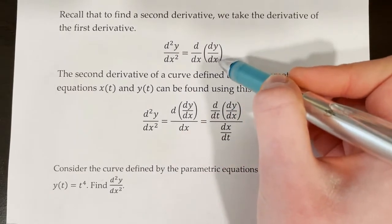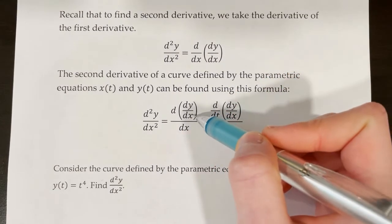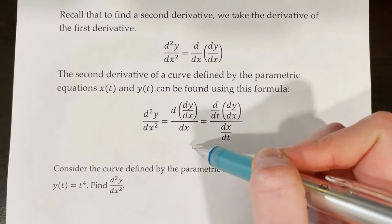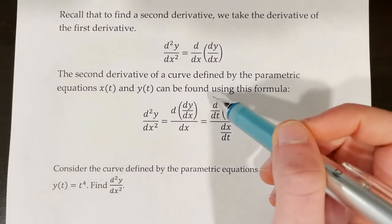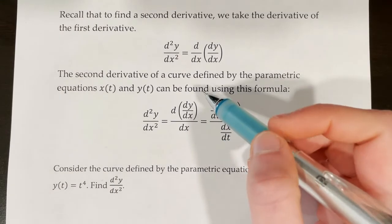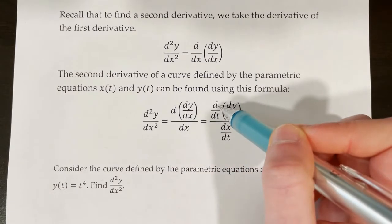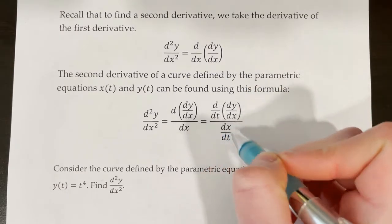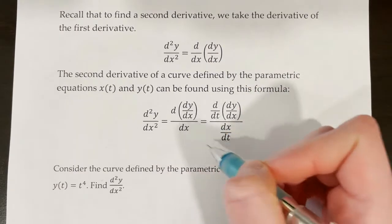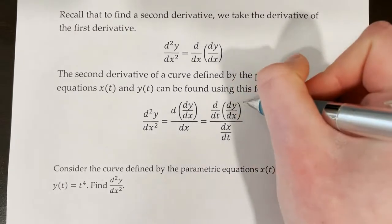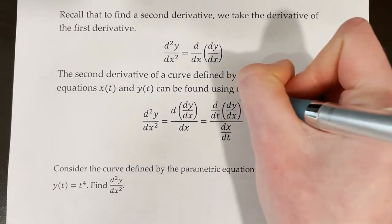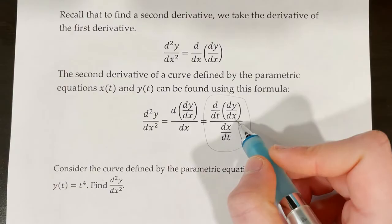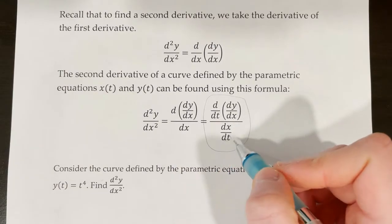Notice that I've placed the dy dx entirely in the numerator — that's completely fine, it's still the same thing. So we're taking d of dy dx with respect to x. But the problem is whenever we take a parametric derivative, we have to include t somewhere. So instead of taking a plain d dx, we're going to take d dt over dx dt. What we wind up with is this formula: d dt of dy dx, our first derivative, over dx dt.